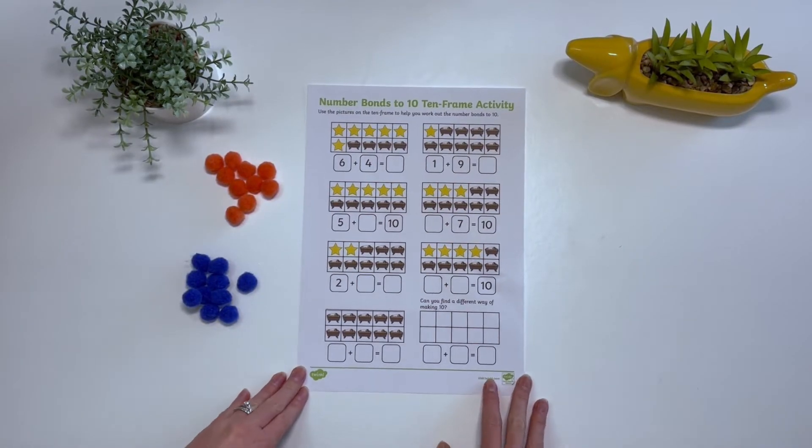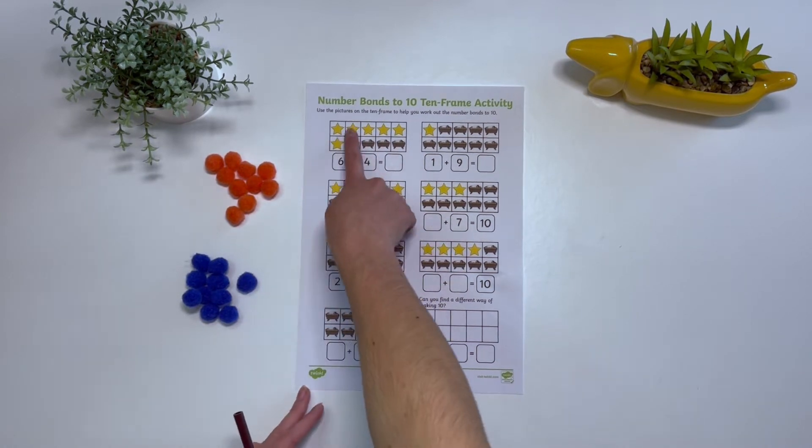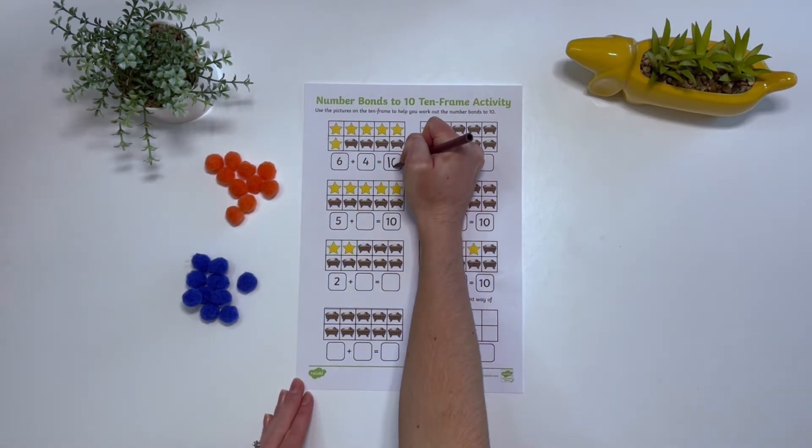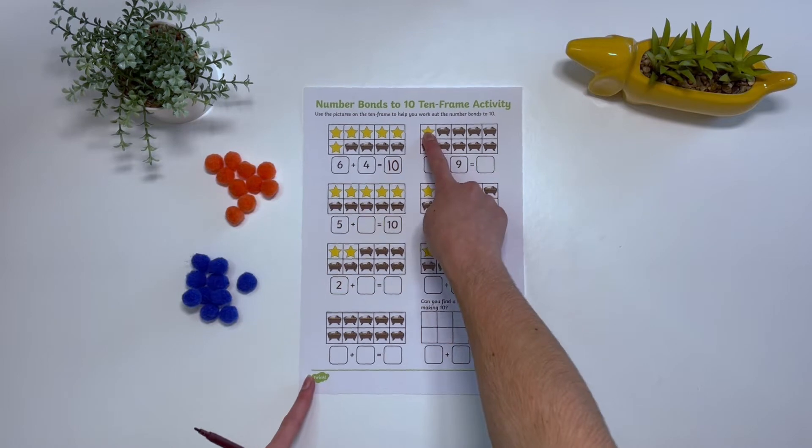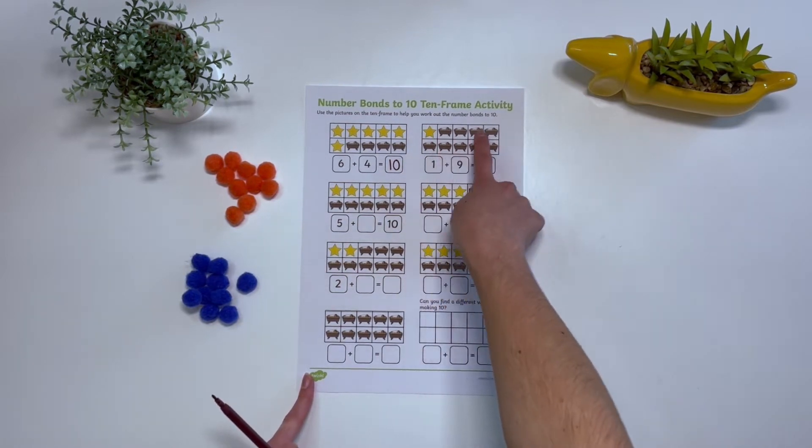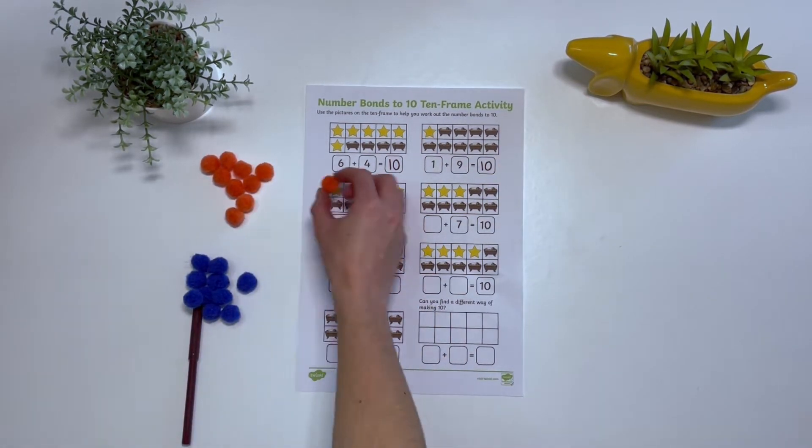This activity has a selection of tens frames representing pairs of numbers that make 10 using pictures. You can encourage children to use the picture prompts to find the missing numbers.